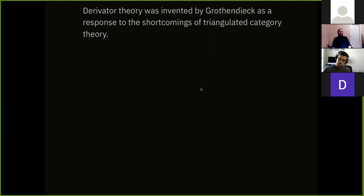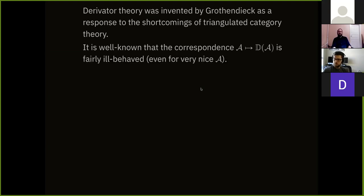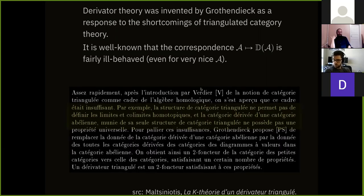Derivator theory was born as one of the many good ideas by Alexander Grothendieck, who devised this theory in response to the many shortcomings of the theory of triangulated categories — put forward by Verdier — to study algebraic geometry in a very categorical way with category-theoretic meanings. The theory of triangulated categories is quite ill-behaved from the point of view of pure category theory, even though the language itself proved to be extremely useful and powerful to describe problems in geometry, then in representation theory, and a platter of applications.